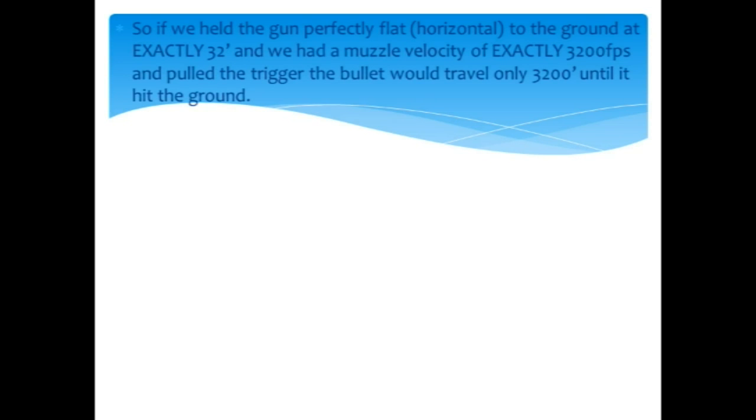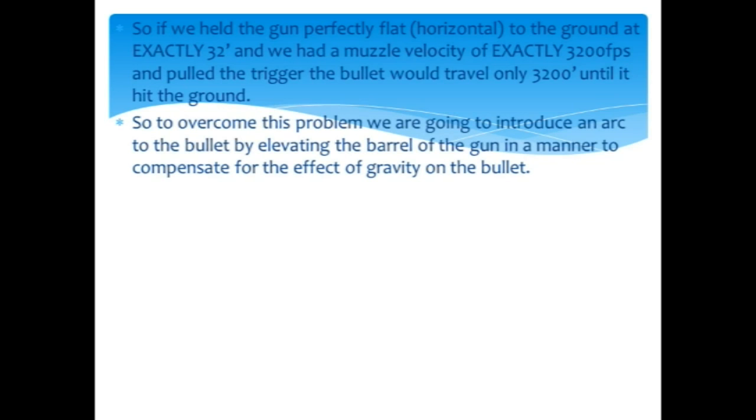So, what you have to understand is if we held the gun perfectly horizontal or flat to the ground at exactly 32 feet off the ground, and we had a muzzle velocity of exactly 3,200 feet per second, and you pulled the trigger, the bullet would travel only 3,200 feet until it hit the ground. 3,200 feet per second out, 32 feet per second down.